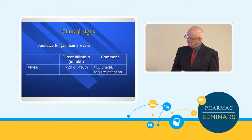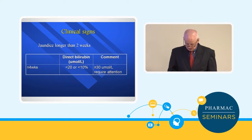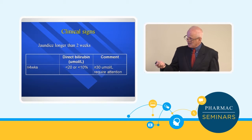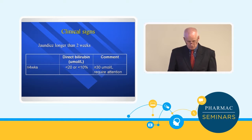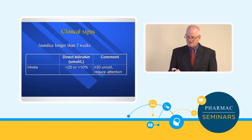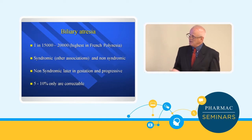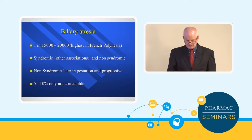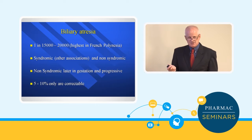Conjugated bilirubin — the bilirubin molecule attached to a glucose molecule that persists in the serum — normally represents less than 10% of total bilirubin, or a level less than 20. A level greater than 30 requires extra thought. Biliary atresia is the condition feared with persistence of conjugated hyperbilirubinemia. It is actually quite rare, but not as rare as some conditions screened for on the Guthrie card. The highest incidence is in French Polynesia, and there seem to be two subgroups: those associated with syndromes and those that are not.